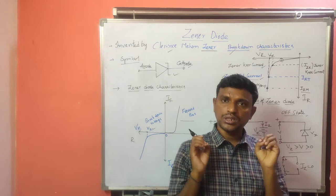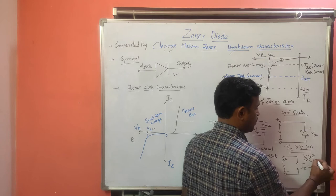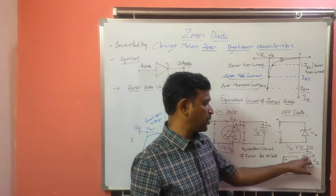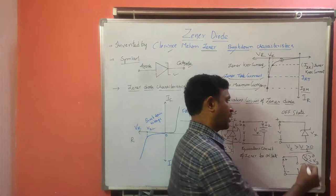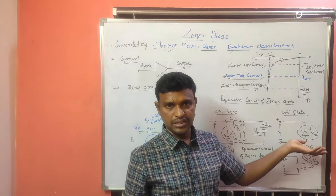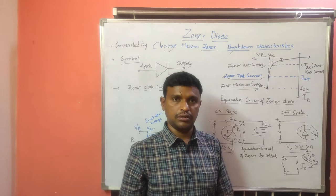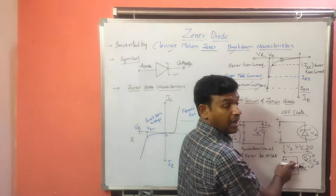In the condition where V is greater than 0 and V is less than VZ, the diode cannot operate — the breakdown process cannot occur across the GINA diode. At that point, we consider it as a reverse bias condition where no current flows. Since there is no current, it is an open circuit. In the equivalent circuit, we replace the GINA diode with an open circuit and the current Iz equals 0.